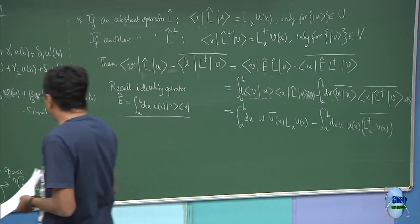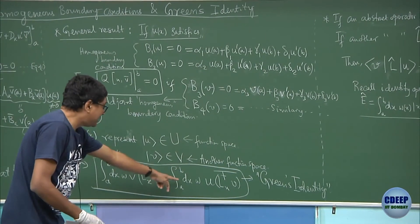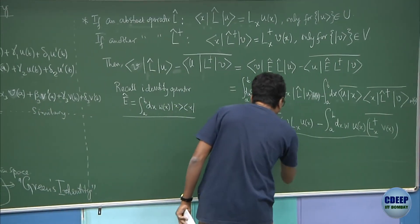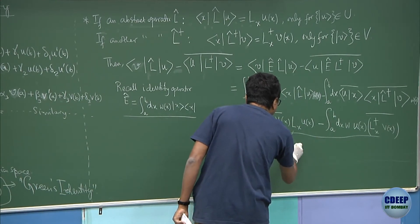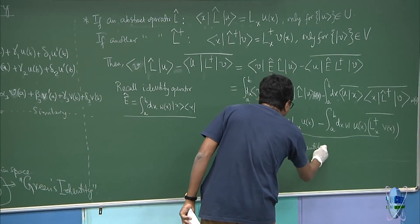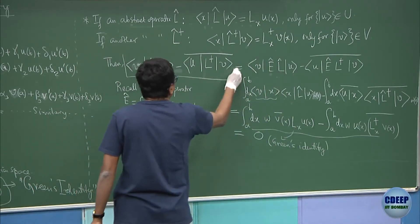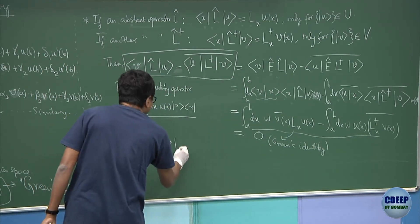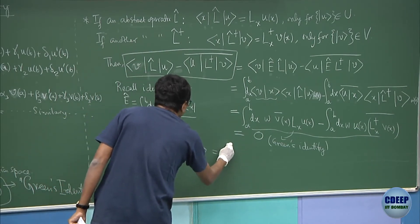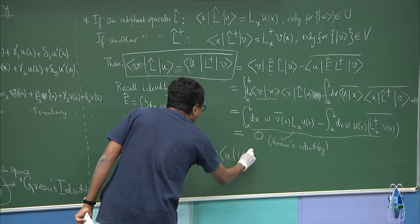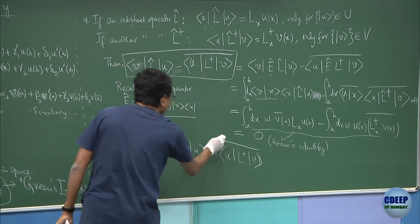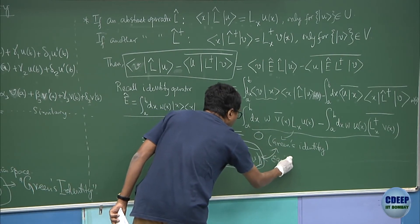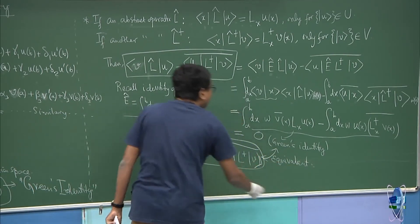Compare this with Green's identity — this is exactly that expression minus that expression, which equals zero. And this being equal to zero is what we call Green's identity. So Green's identity is nothing but exactly stating that ⟨v|L̂|u⟩ = ⟨u|L̂†|v⟩*, which is equivalent to Green's identity that we had been writing.